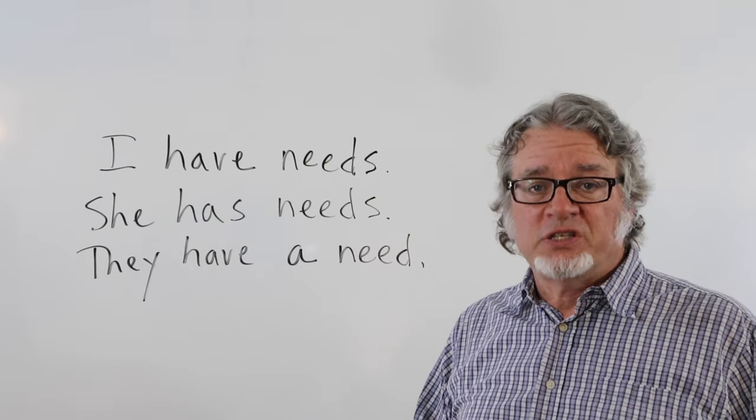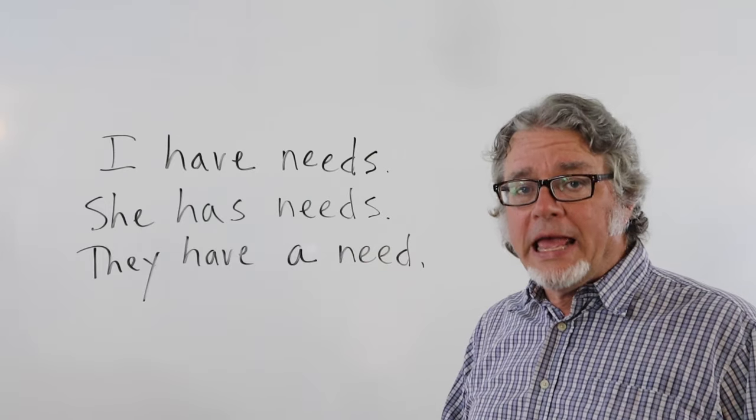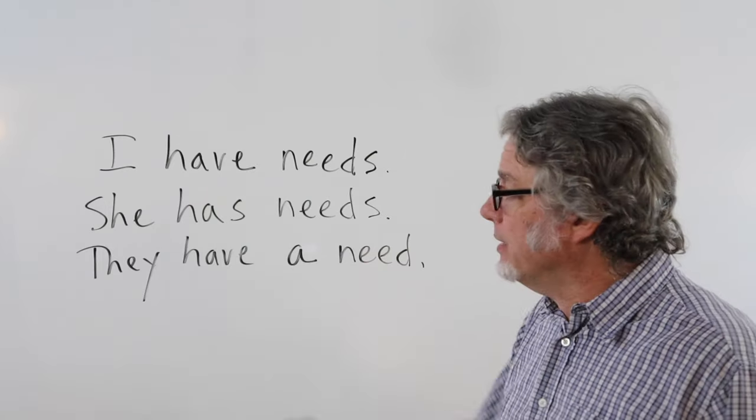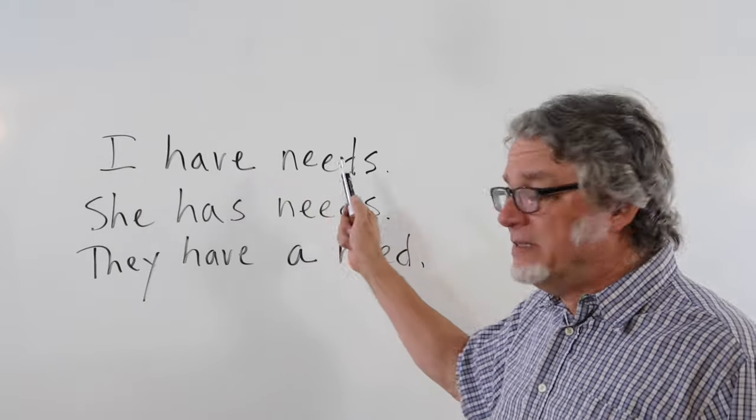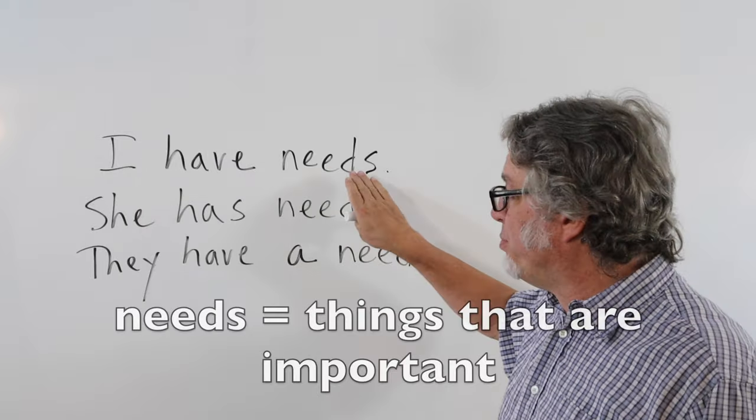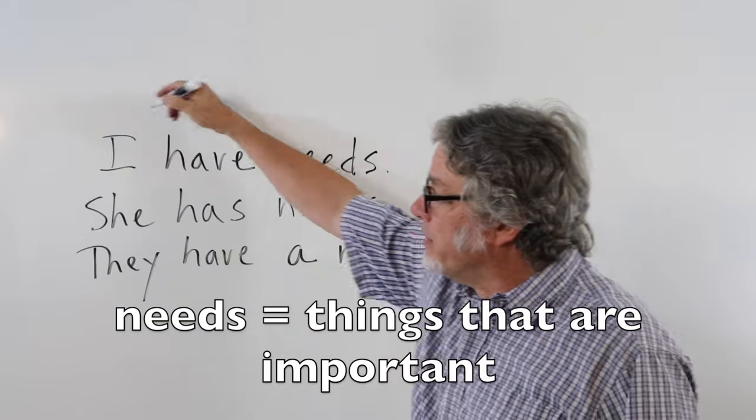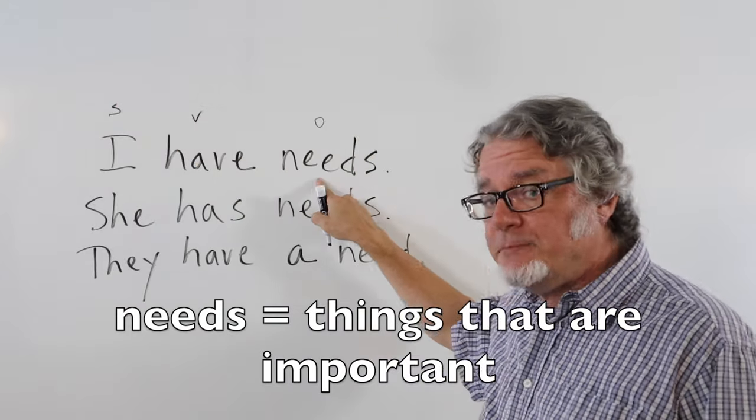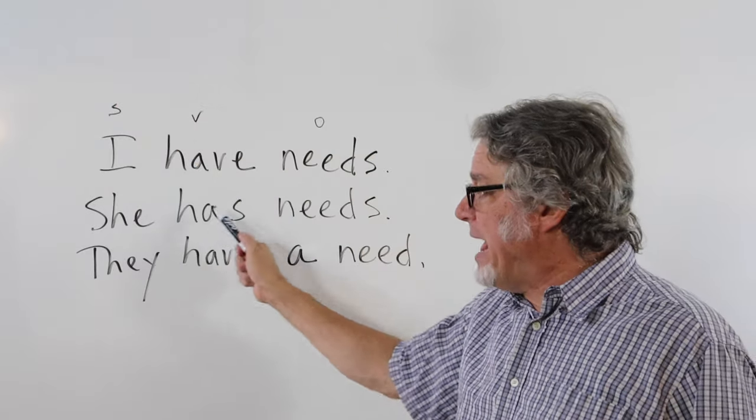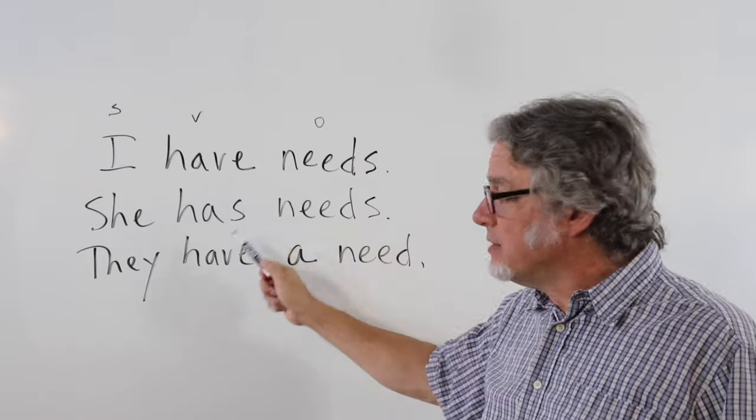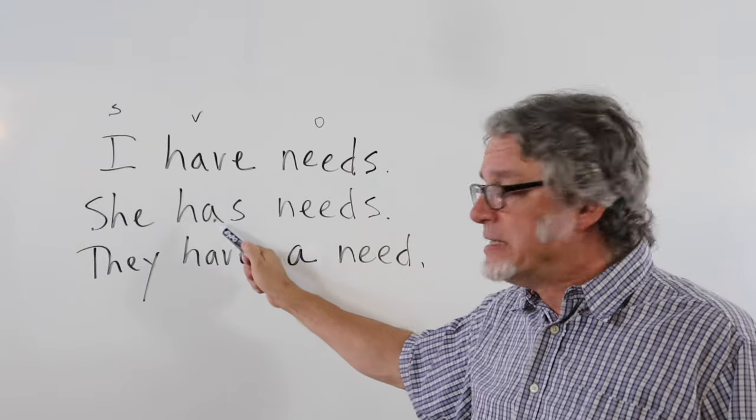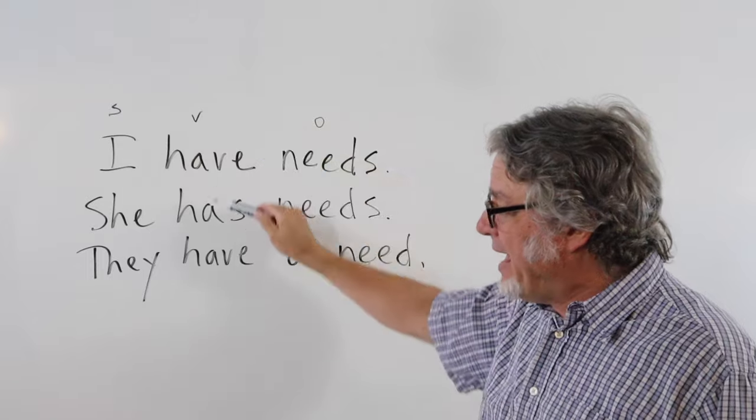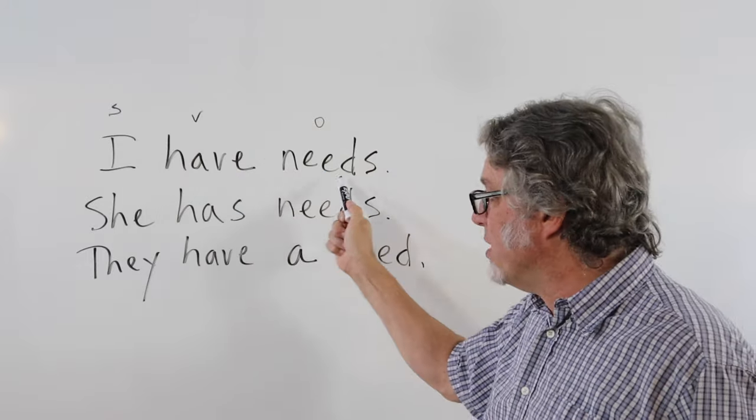It's good to know that you can use need as a noun. In this sentence, I have needs. This is in the plural form. Here is the subject, this is the verb, and this is an object. She has needs. This sentence is also in the present tense, matching the subject. Notice the verb have is used with needs.